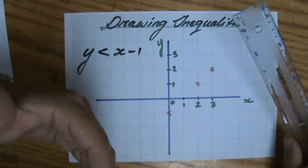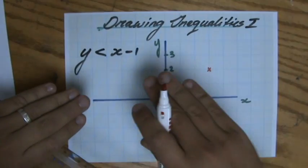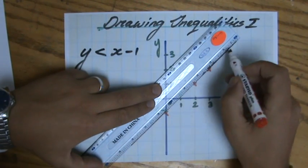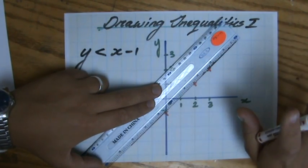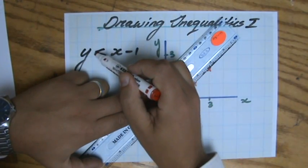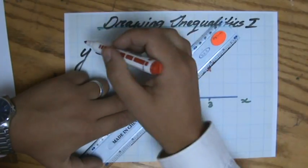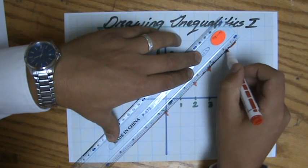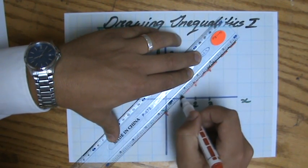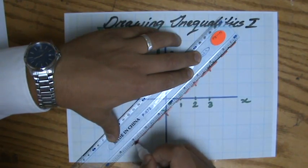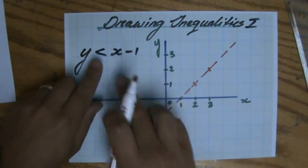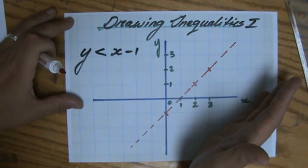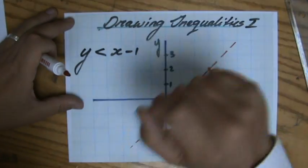But now you just slow down, because now the difference comes because we're talking about an inequality, not an equality. With an equation, you would just simply draw the line. But with an inequality you have to take care. If it is only smaller than x minus 1, or only bigger than, then I do not draw a line but I draw a dotted line — because that shows that all the points on the line are not part of the solution. In this case it's smaller than x minus 1, so I'm only interested in the lower part, which is below my line, and the points on the line are not part of the solution.